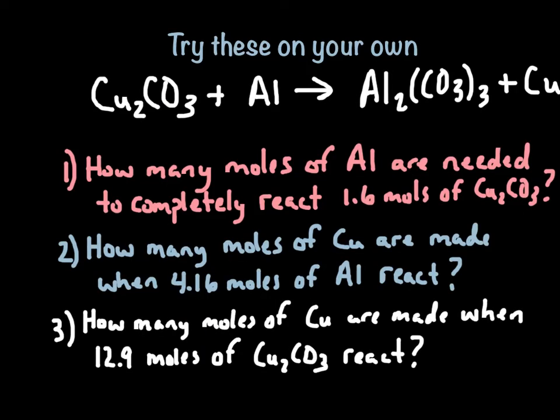Here are three problems for you to try. I've given you a skeleton equation that is not balanced, so you're going to have to balance it first. Then tell me: how many moles of Al are needed to completely react with 1.6 moles of Cu2CO3; how many moles of copper are made when 4.16 moles of Al react; and how many moles of copper are made when 12.9 moles of Cu2CO3 react. Three action lines — just one-steppers each. You can do this. Have a great day.